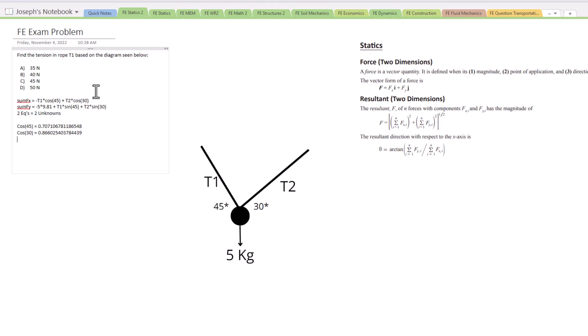So we're going to have a negative 0.707 times T1, the tension in our rope, plus 0.866 times T2 equals 0. Both these equations equal 0 since the body is not moving. It's a static body.